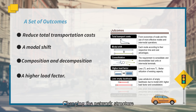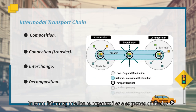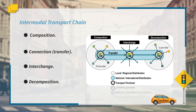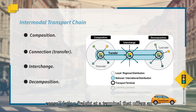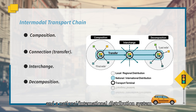The intermodal transport chain is often shown as a sequence of modes, as illustrated in the figure. The first step is composition — the process of assembling and consolidating freight at a terminal that offers an intermodal interface between a local distribution system and a national distribution system. This is commonly referred to as the first mile.